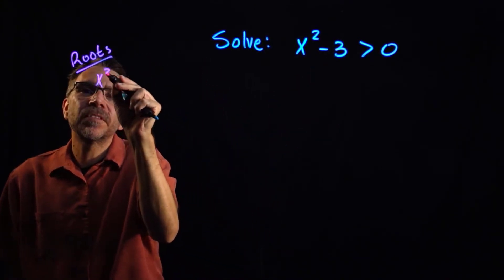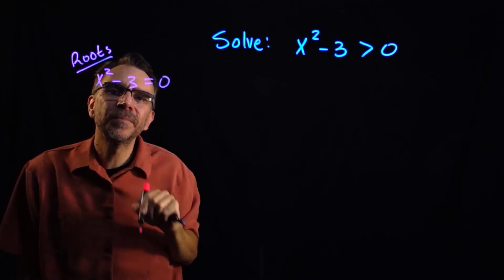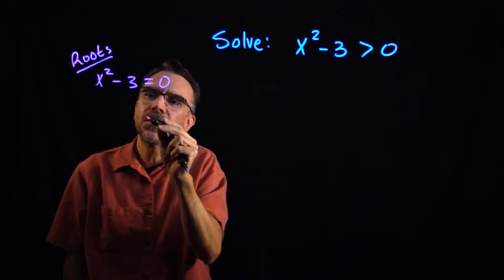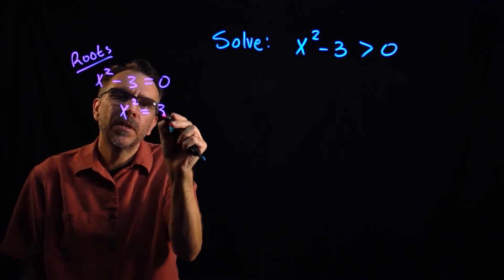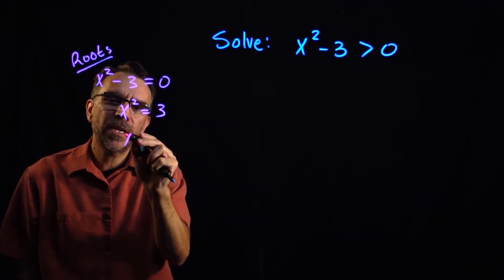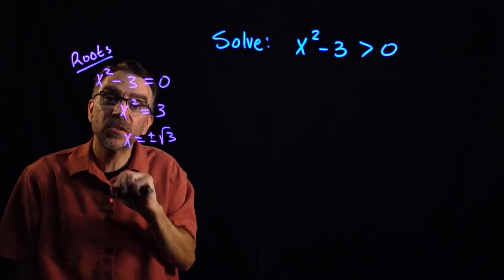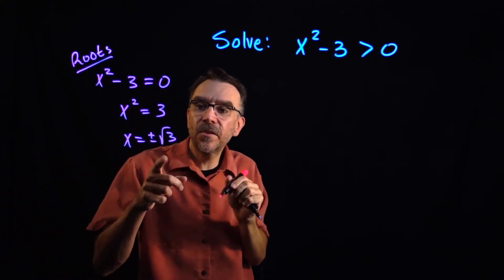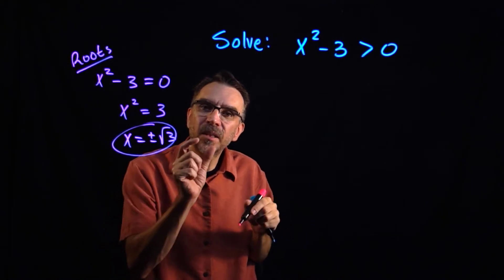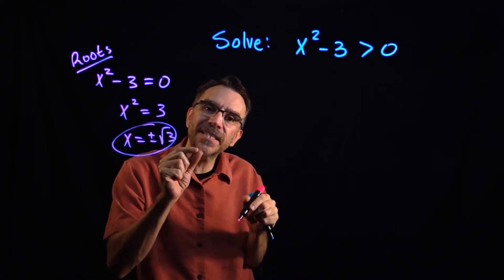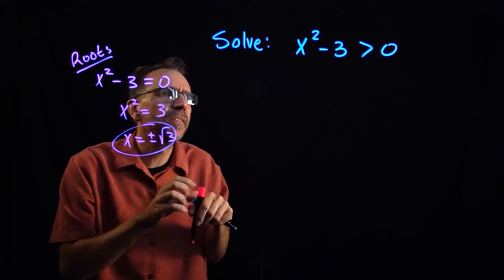We'll set x squared minus 3 equal to 0. We'll get two solutions since it's quadratic — I can extract the roots. So x squared equals 3, which gives x equals plus or minus square root of 3. Those are our critical numbers — the x-intercepts, the places where the sign could change from positive to negative or negative to positive.